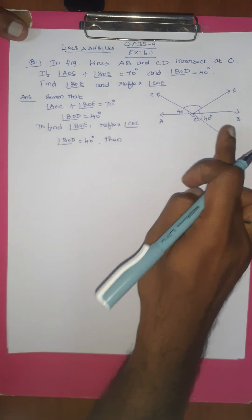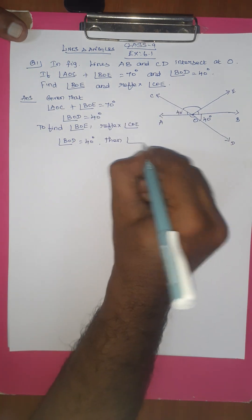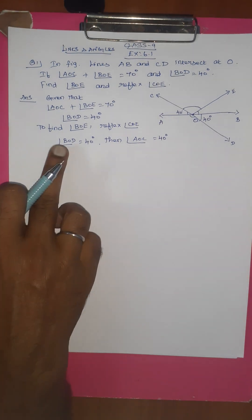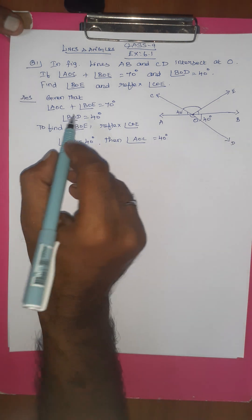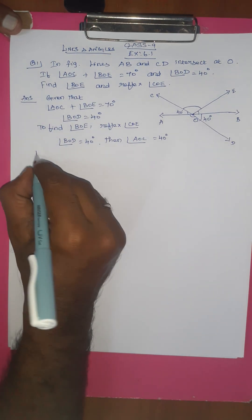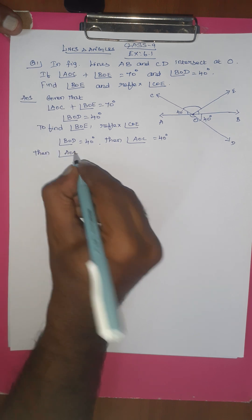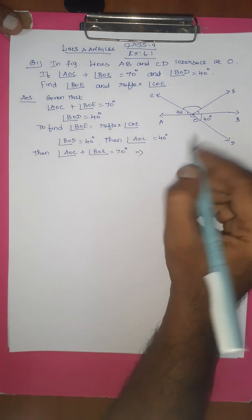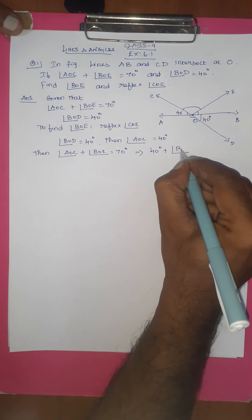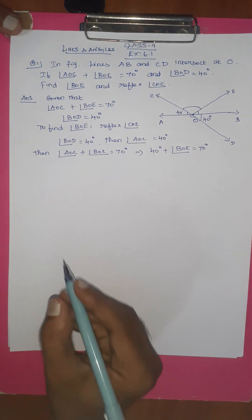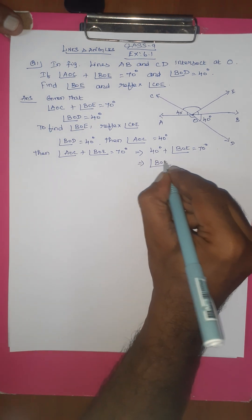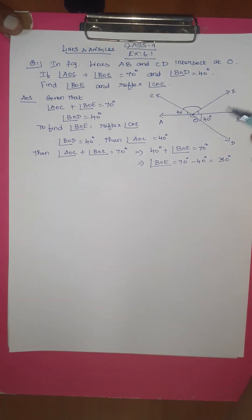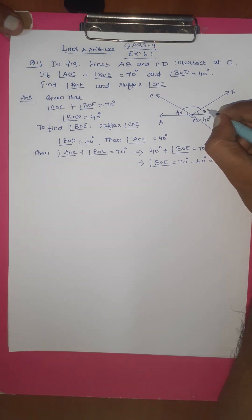Now, angle AOC plus angle BOE equals 70 degrees. Angle AOC is 40 degrees, so 40 plus angle BOE equals 70 degrees. Therefore, angle BOE equals 70 minus 40 equals 30 degrees. So angle BOE equals 30 degrees.